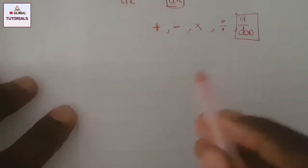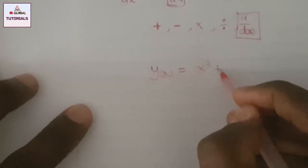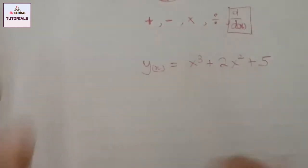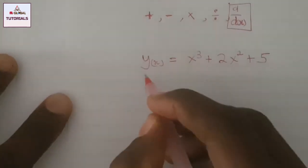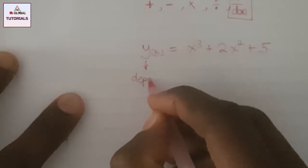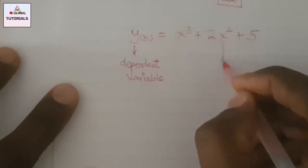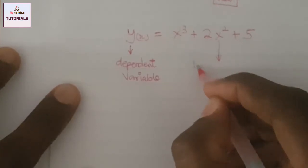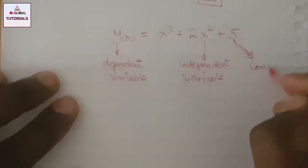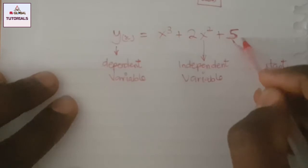When we take a function like y(x) = x³ + 2x² + 5, this is a basic example. Our y is the main function and we call it the dependent variable. The x inside the function is another variable and we call it the independent variable.